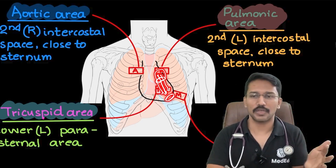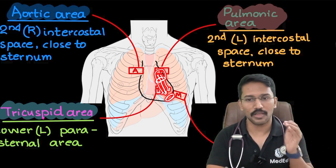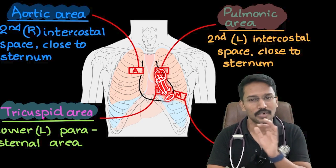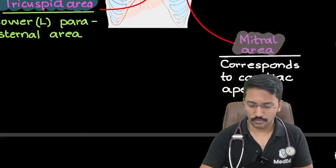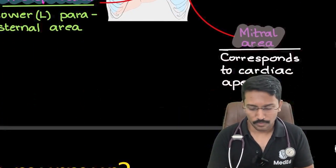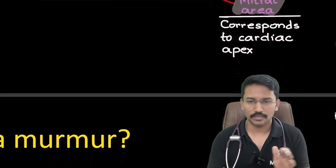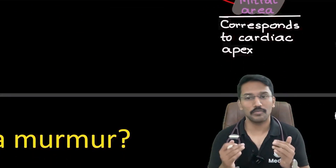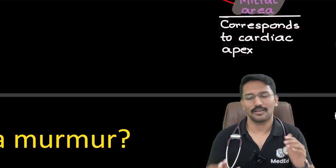If the apex is displaced and it is not in its usual location, obviously I will not be able to hear the murmur in the usual location. That is why I would always say mitral area corresponds to the cardiac apex. And in fact, for many examiners including me, this is a simple way to fail PG students.